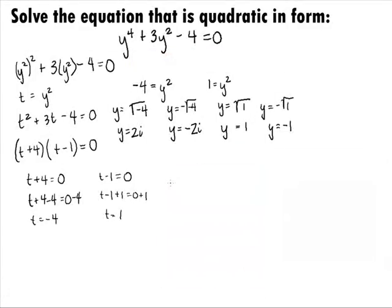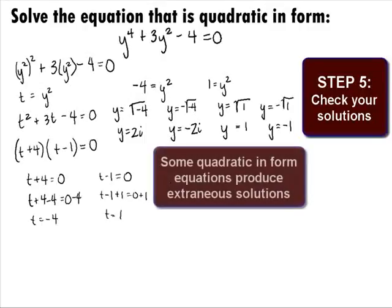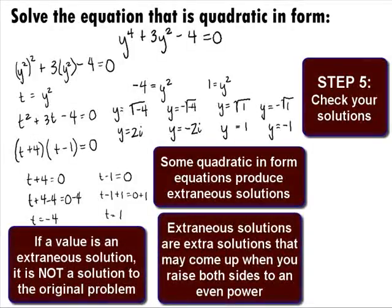Even though we have found 4 solutions, we still want to do Step 5, which is to check the solutions. In some cases, you will be working with rational exponents and square roots in your problems, and those types of equations can cause extraneous solutions. Recall that an extraneous solution is one that is a solution to an equation after raising both sides by an even power, but is not a solution to the original problem. Even though not all quadratic in form equations can cause extraneous solutions, it is better to be safe than sorry and just check them all.